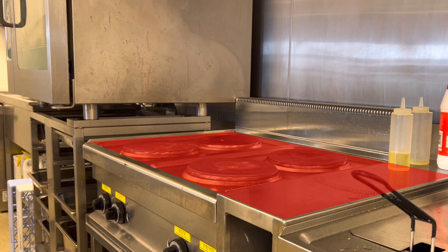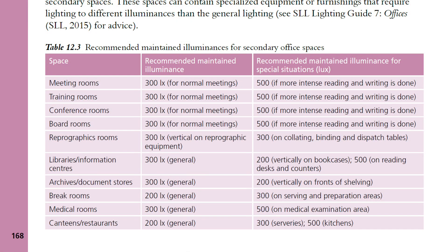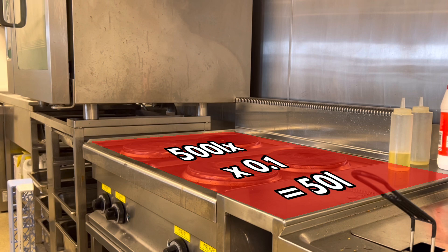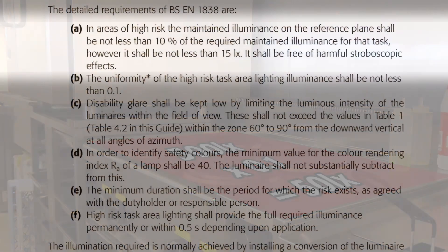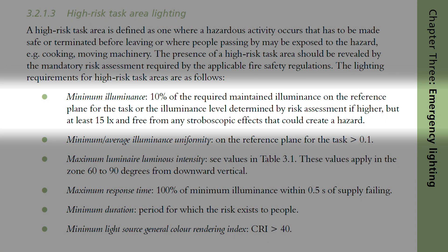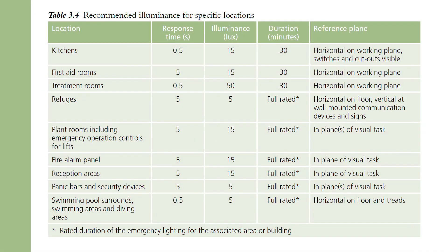On this reference plane, the average illuminance should be at least 10% of the illuminance level required for that task under normal conditions. Using a commercial kitchen as an example, a common normal lighting value is 500 lux, so in an emergency the lighting level on the task area would need to be at least 10% of that — 50 lux. The requirement also states the illuminance should never be less than 15 lux in a high risk task area, so if a task required 100 lux normally, applying the 10% rule would give 10 lux, which is not acceptable — it would still need to be at least 15 lux.